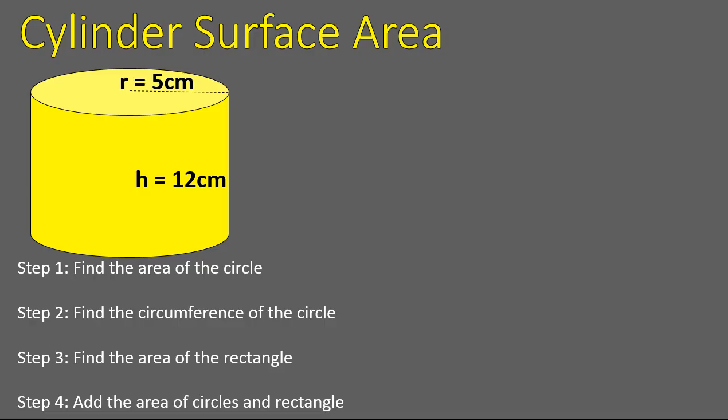Here are the four steps we need to follow to find the surface area of a cylinder. Step one: find the area of the circles on the top and bottom. Step two: find the circumference of the circle — the distance around the outside — because that gives us what we need to find the area of the rectangle. Then we add the area of the circles and the area of the rectangle to get our final surface area. Let's do these steps in order.